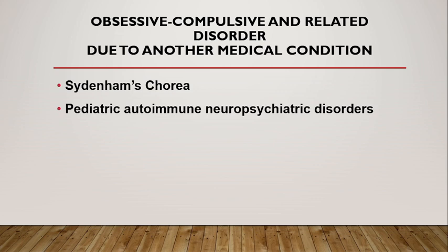An example is Sydenham's chorea — a neurological manifestation of rheumatic fever, which is in turn due to a Group A streptococcal infection. It is characterized by a combination of motor and non-motor symptoms. Non-motor features include obsession, compulsion, attention deficit, and emotional lability. Although individuals with Sydenham's chorea may present with non-neuropsychiatric features of acute rheumatic fever such as carditis and arthritis, they may also present with obsessive compulsive disorder-like symptoms; such individuals should be diagnosed with obsessive compulsive and related disorder due to a medical condition.